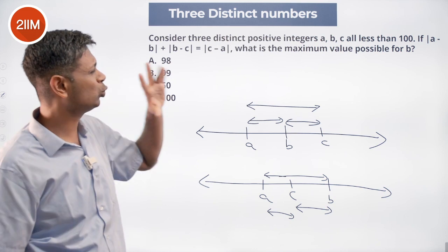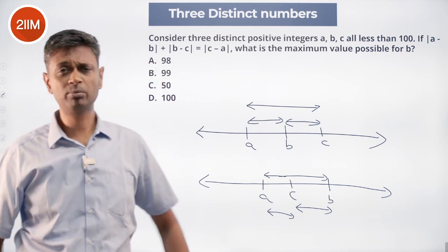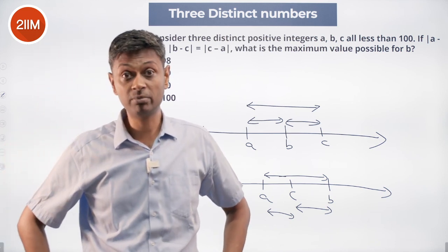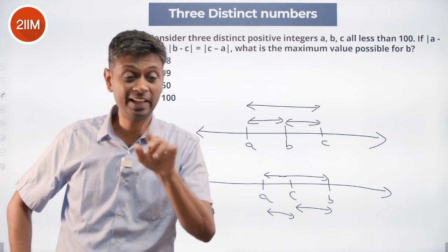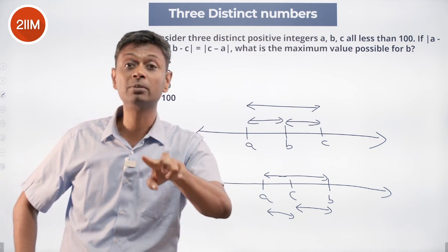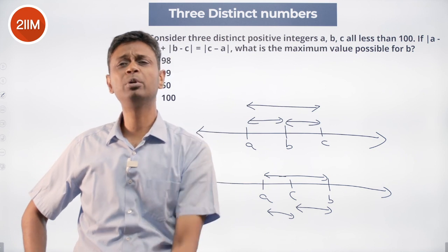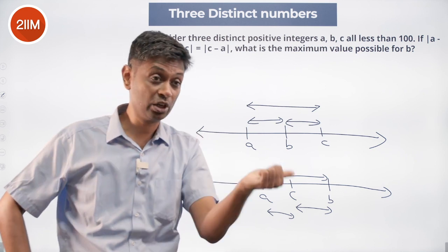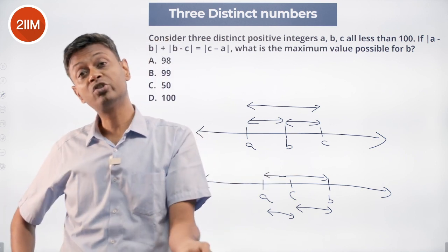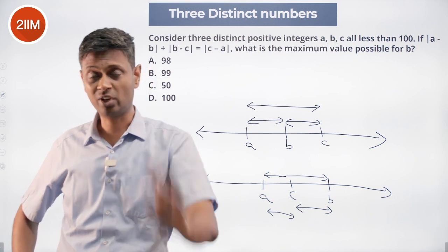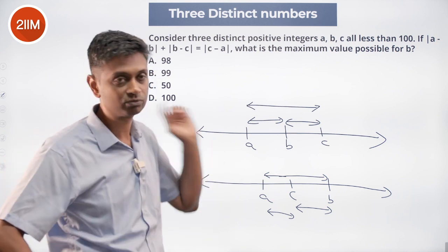What this is telling us is beautiful: modulus of a minus b plus modulus of b minus c is equal to modulus of c minus a. What it is telling us is that a and c are at the extremes. B is in the middle. B is the number between a and c. A could be the smallest and c could be the highest, or c could be the smallest and a could be the highest. That's all right. But b is in the middle. That much we know.